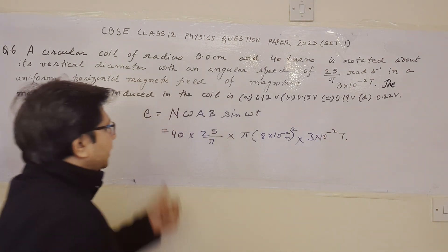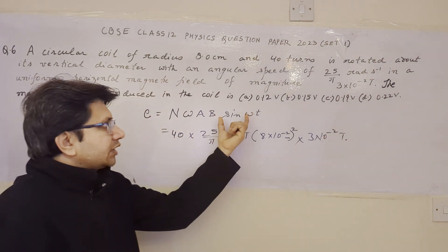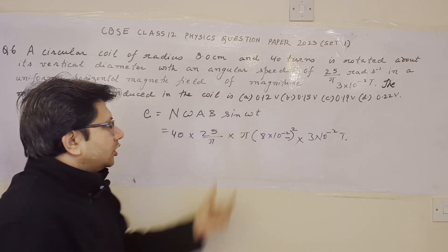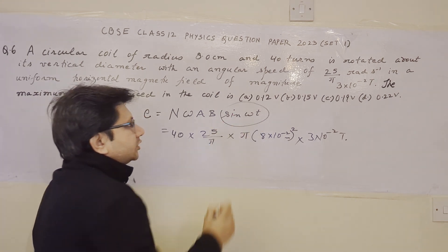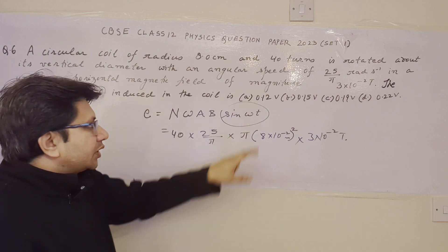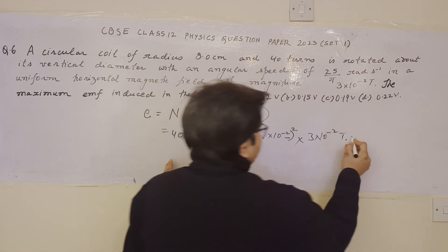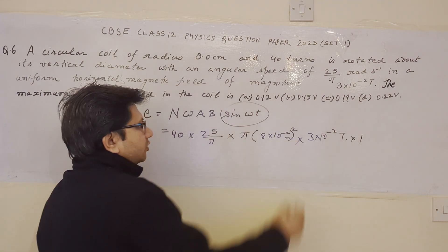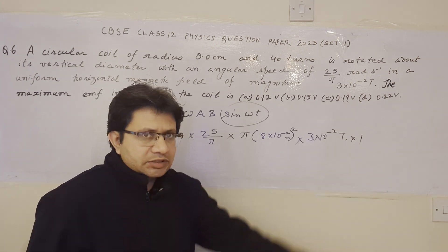And for the maximum EMF, this sine omega T must be maximum. The maximum value of sine is 1 at the angle of 90 degrees. Sine 90 is 1. So we can say that here we put 1. Sine omega T, we put 1 as the maximum value.